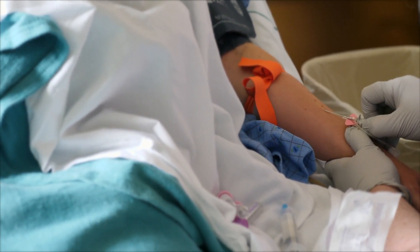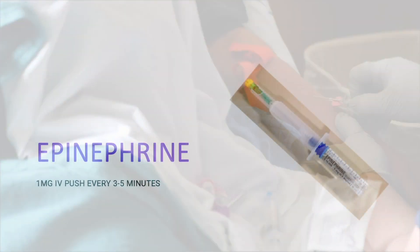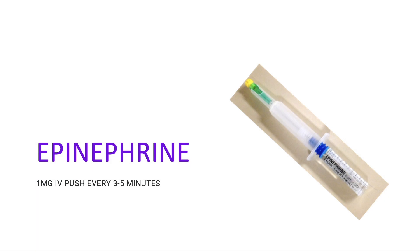Once your epinephrine is ready, immediately give one milligram of epinephrine followed by a 20 mL flush, and you can repeat this every three to five minutes. In asystole and PEA, the quicker we can give the epinephrine, the better the outcome for the patient, so give it as early as possible.